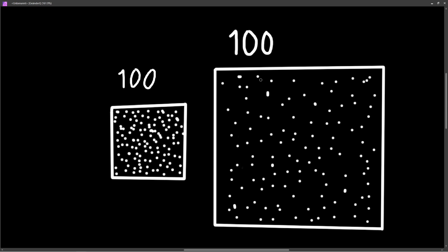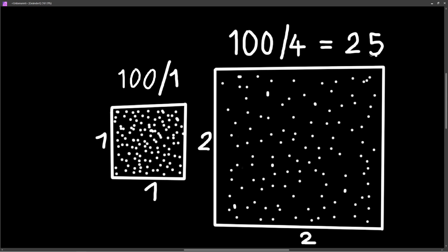We need to divide the amount of photons by the surface area. Let's say one surface is 1 inch and another is 2 inches. One by one gives 1 square inch, and two by two gives 4 square inches. So here we have 100 photons per square inch, and there we have 25. This is a good way to measure brightness, and this is what we want to calculate in our ray tracer.